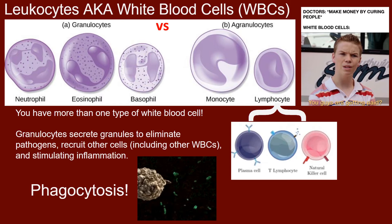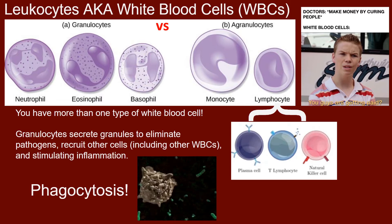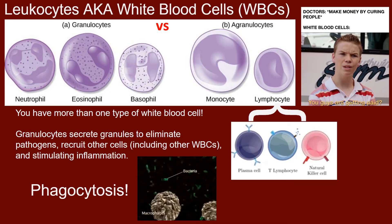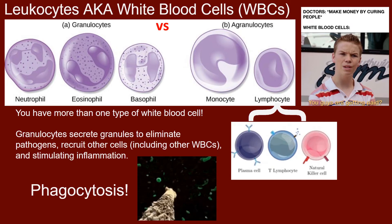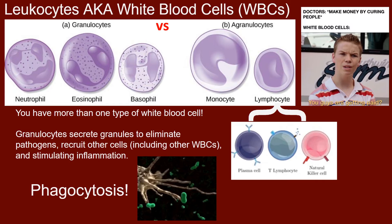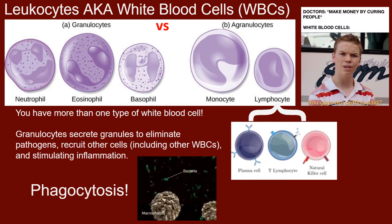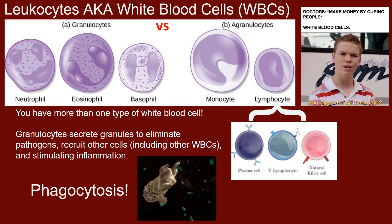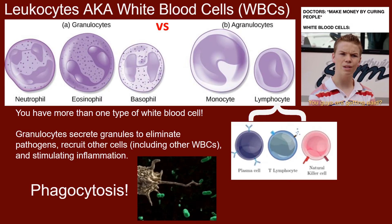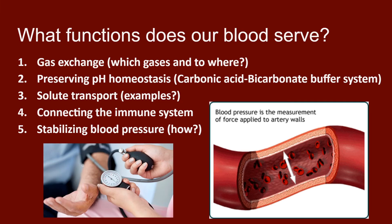Did you know you have more than one type of white blood cell? Some release chemicals called granules that either attack pathogens or induce a more substantial immune response, while others phagocytize pathogens by consuming them with their membranes and breaking them down. White blood cells even use parts of pathogens to tell other white blood cells what to look for — kind of like a sketch artist does for the police.